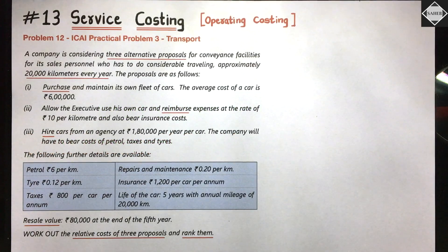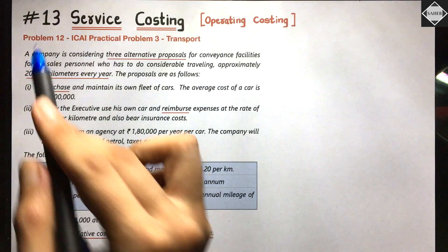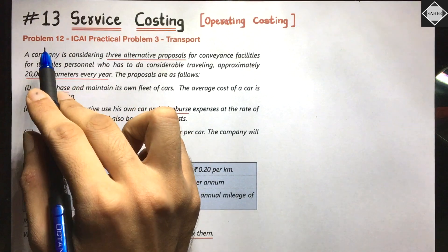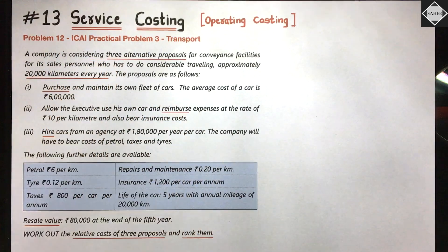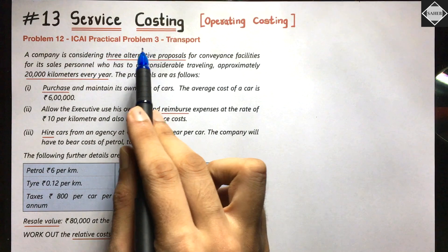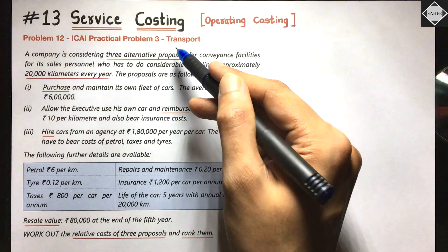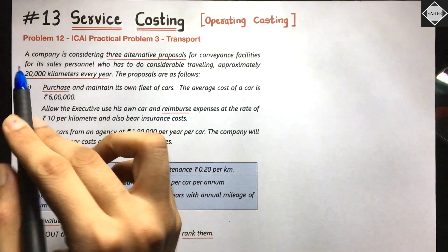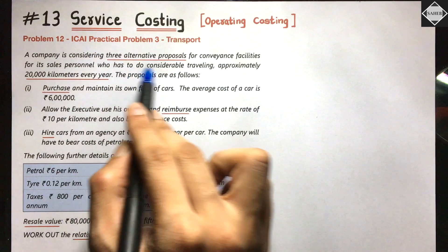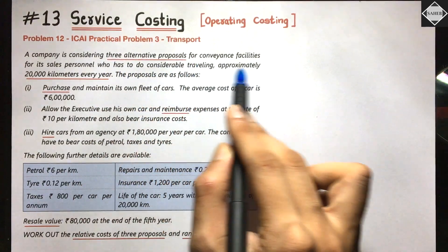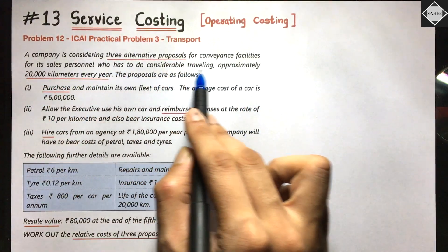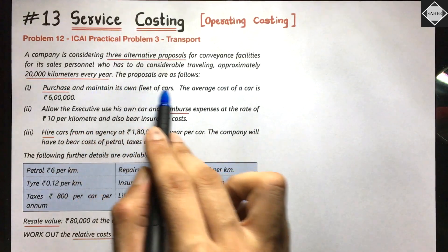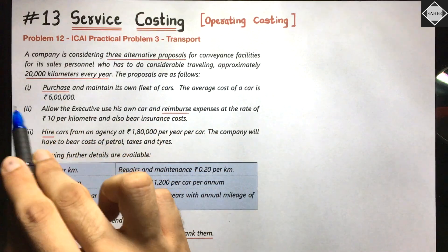Welcome back to Sahab Academy. In this 13th video of the service costing chapter, we are going to solve our 12th problem of the series. The question is from ICSI study material, practical problem number three. We are coming back to the transport industry. A company is considering three alternative proposals for conveyance facilities for its sales personnel who have to do considerable traveling — approximately 20,000 kilometers every year.